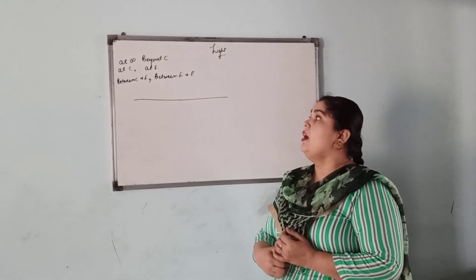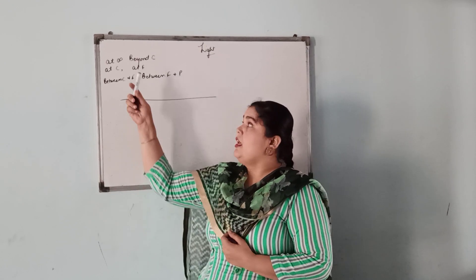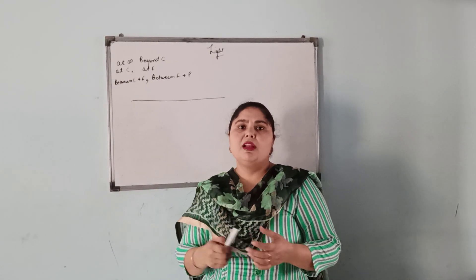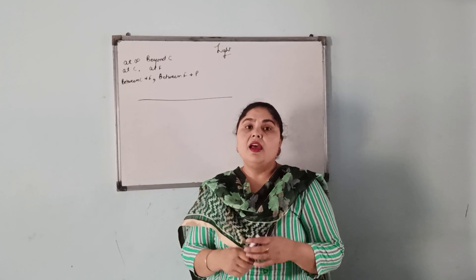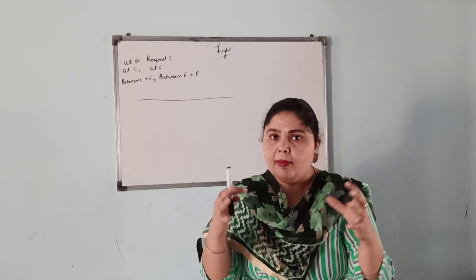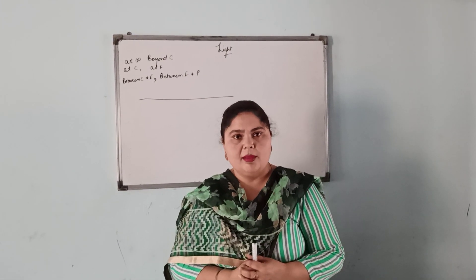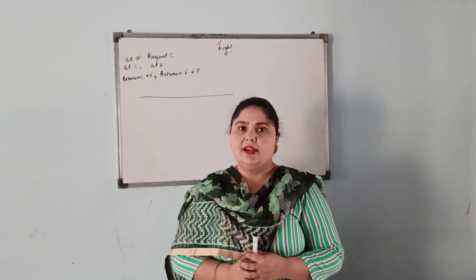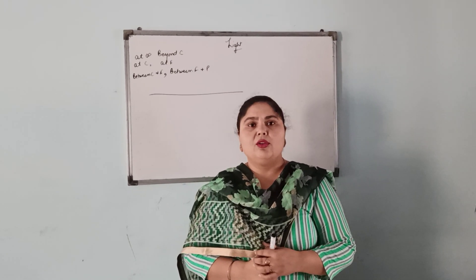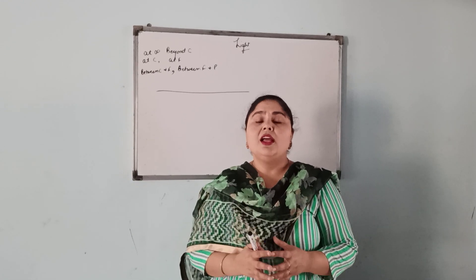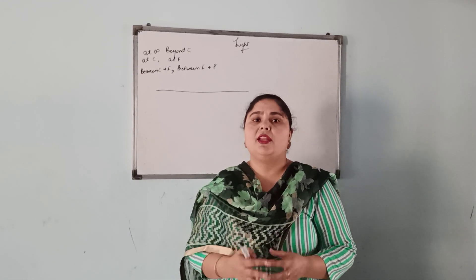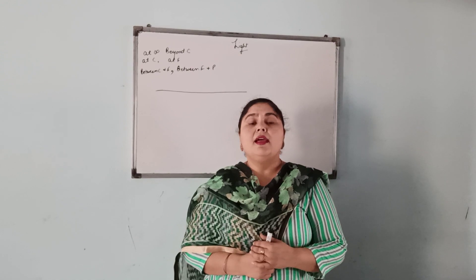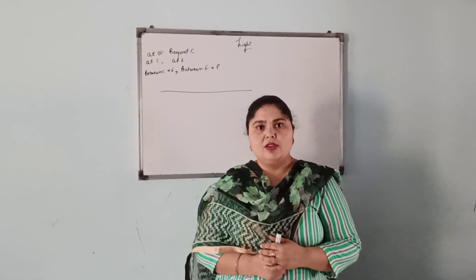Yesterday I discussed that if the object is at infinity, the image will be formed at F. When images are formed by direct meeting of rays, it is called a real image, and a real image is always an inverted image. This image can be taken on the screen. Real image is formed by actual meeting of rays — it is always inverted and it can be taken on screen.